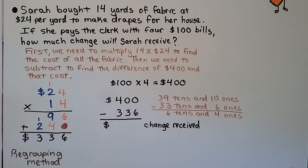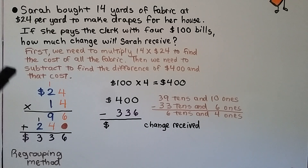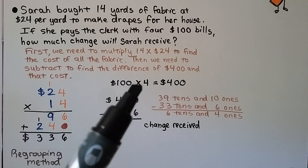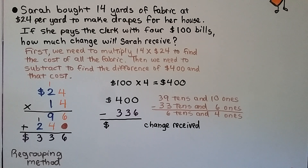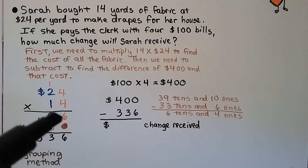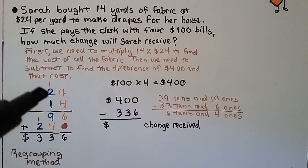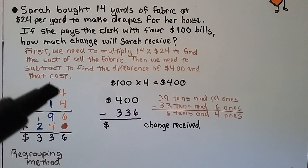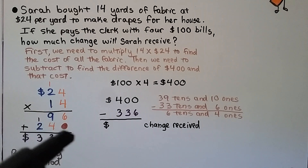Sarah bought 14 yards of fabric at $24 per yard to make drapes. She pays with four $100 bills — that's $400. How much change will she receive? First we multiply 14 times $24 to find the cost. Using regrouping: start with ones — 4 times 4 is 16, regroup the 1 and put the 6 down. Then 4 times 2 tens is 8 tens, plus 1 more ten is 9 tens. Write 9 in the tens place.